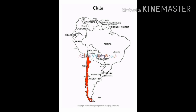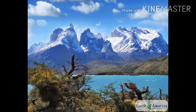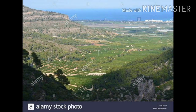Many big cities lie in the coastal plain. There are many islands in the southern part, which include the Falkland Islands and Hornos Island, while the Galapagos Islands lie to the north-west of South America.